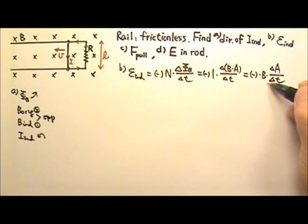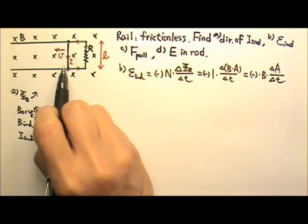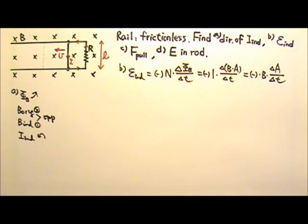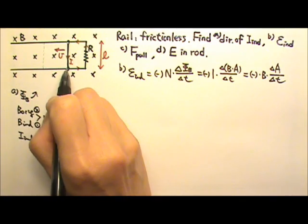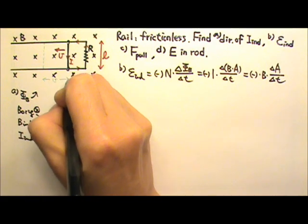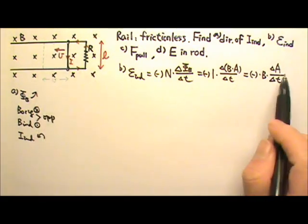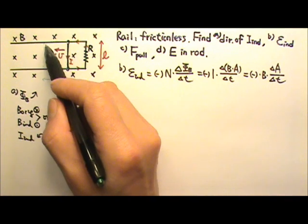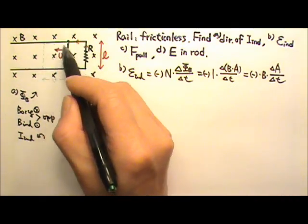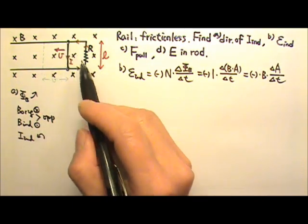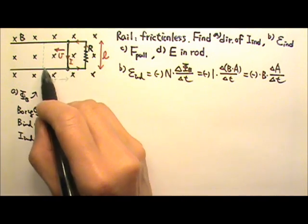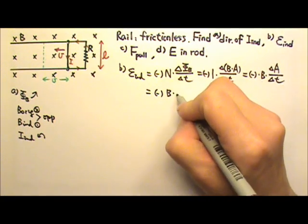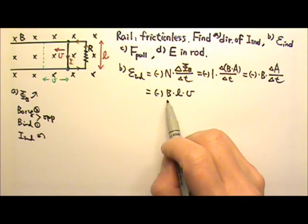So I get the delta A over delta T is the area change every second. The bar gets pulled to the left at speed V. In one second, the bar would be over here. The distance traveled by the bar would be V. The distance traveled in one second is the speed. So the area change in one second would be this much. The area used to be this much, and then it's going to become that much. The changing area in that one second is this part. It is the height times the base, L times the base V. So the induced EMF is B times delta A over delta T is L times V. So the induced EMF is BLV.